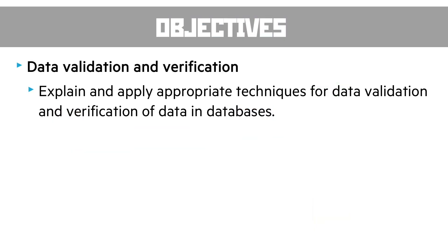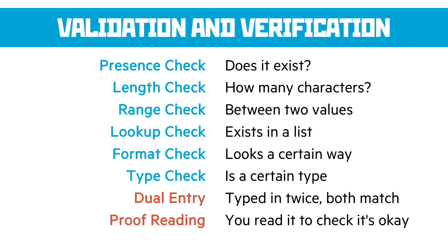The next objective is data validation and verification — we did this at AS so I'll just refresh a big list. You've got your presence check to make sure something's there, your length check to see how many characters you've got, your range check to see if a numerical value exists between other values, a lookup check to see if something's part of a list, a format check to see if it looks a certain way with letters or symbols in certain positions, a type check to see if it's an integer, float, or boolean. Then there's verification: validation checks it looks okay, verification checks that it is correct. Methods include dual entry — typing something in twice like the password field when signing up — and proofreading.